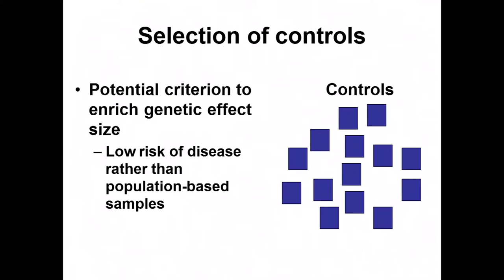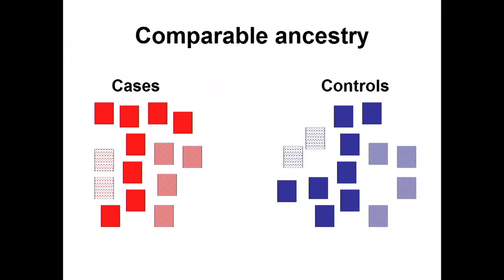When considering the ascertainment of controls, one could use a population base — simply people who don't have disease. But you might also enrich for identifying genetic variants by looking for controls with a lower risk of disease, perhaps individuals who don't have other family members affected with disease.